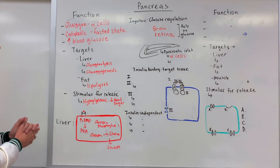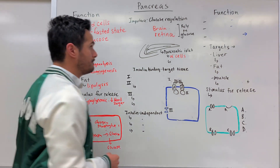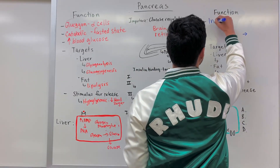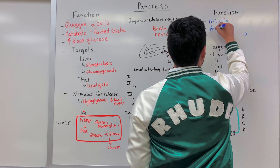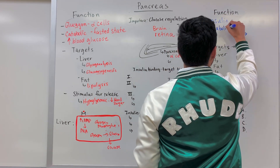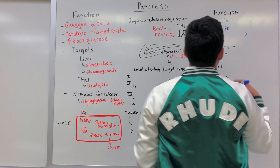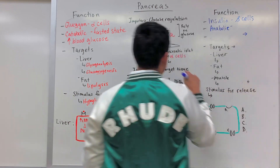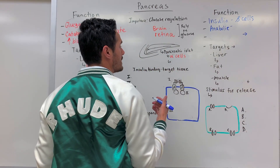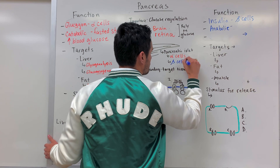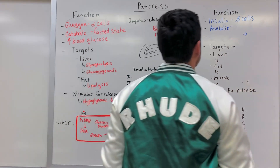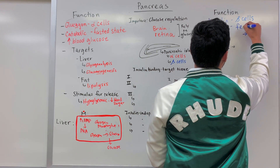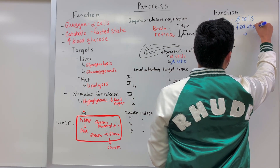Now that we've talked about glucagon, let's move on to insulin. Insulin is what's known as an anabolic hormone, meaning that it helps to build things. Insulin is going to be secreted by the beta cells within the pancreatic islets of the pancreas. It's an anabolic hormone that's going to be released whenever we are in the fed state, meaning we recently had a meal.